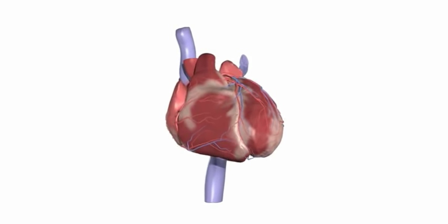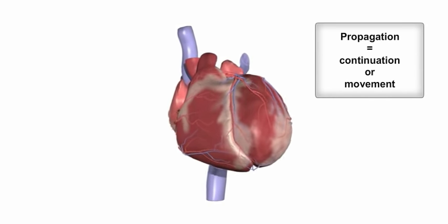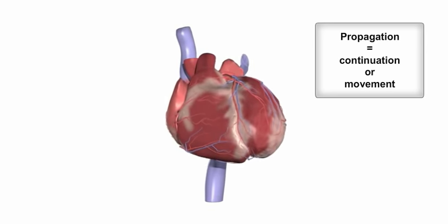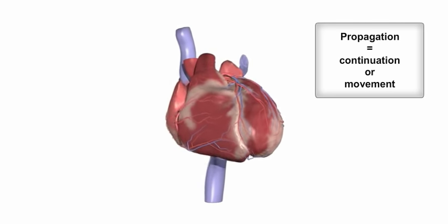The heart's conduction system controls the generation and propagation of electrical signals, or action potentials, that cause the heart's muscles to contract and the heart to pump blood.